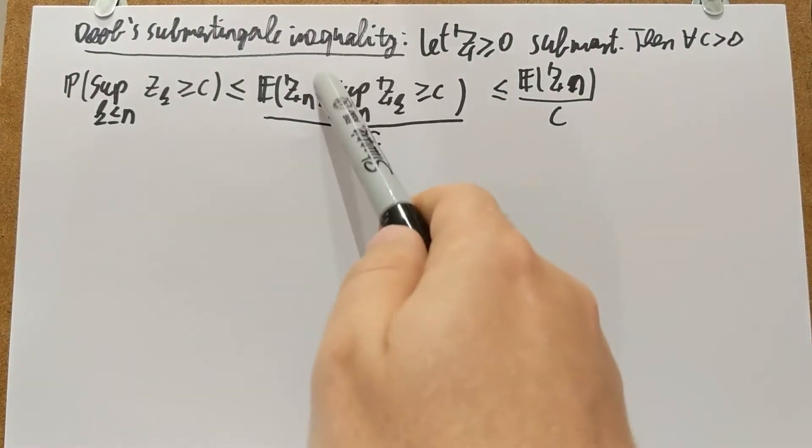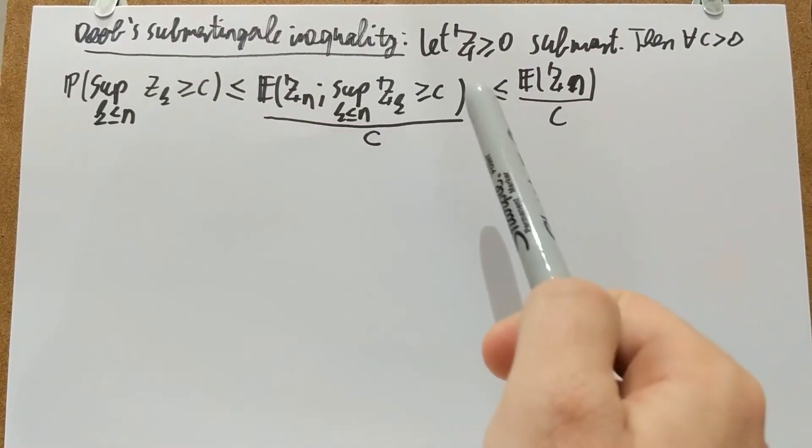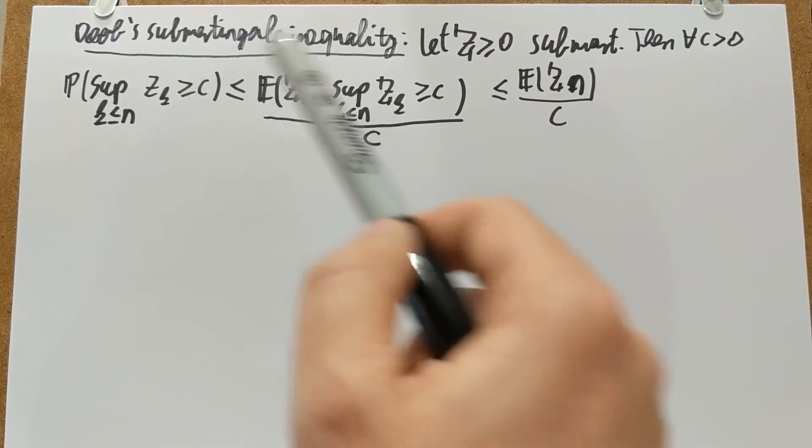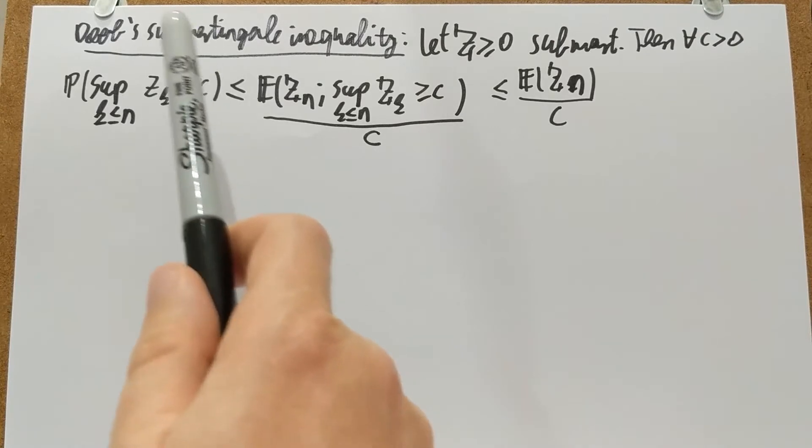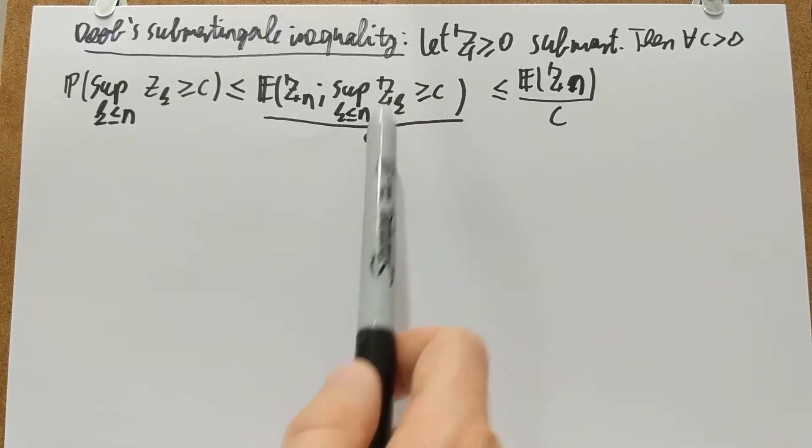So it's clear that if I forget about this indicator, then I'm just making the whole thing larger because that is non-negative. So this bound is clearly bounding that. I'm going to prove that this probability is bounded by this expectation here.